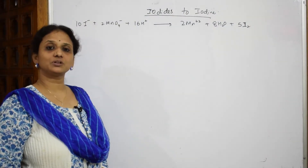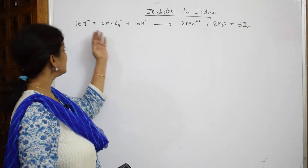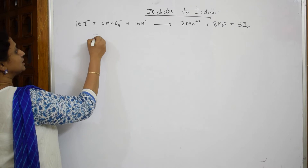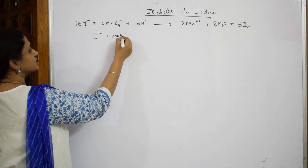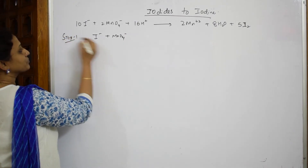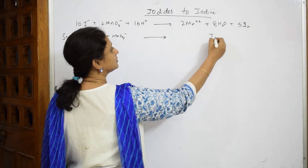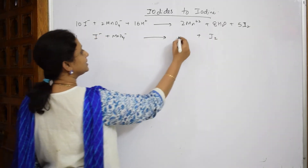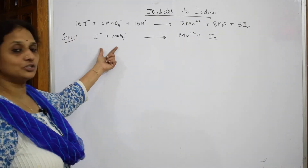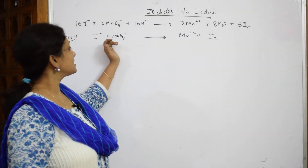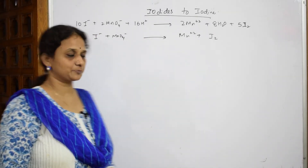Let's come back and do one more oxidizing property: the conversion of iodides to iodine. Here we want to convert I⁻ using MnO₄⁻. This is your exam question — I⁻ and MnO₄⁻ are given. Iodides get oxidized to iodine (I₂), and MnO₄⁻ gets reduced to Mn²⁺. Remember these products.